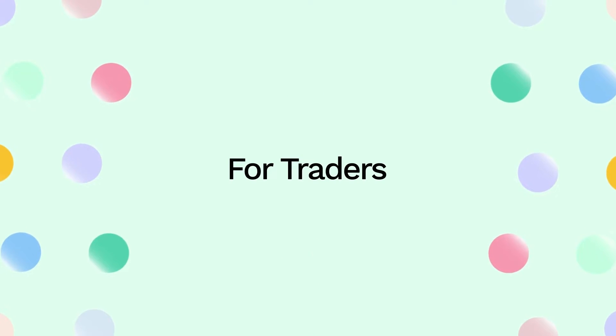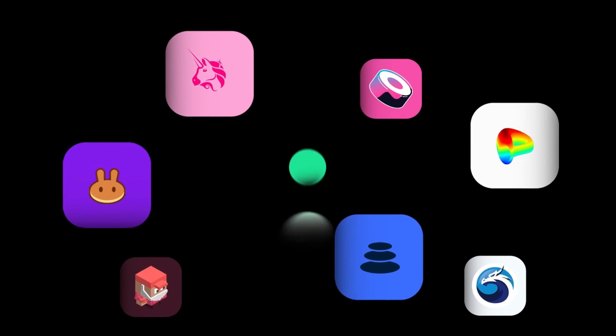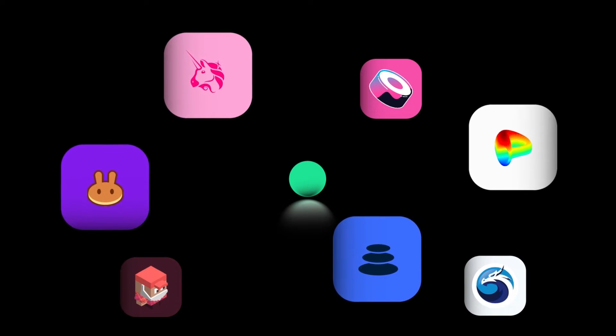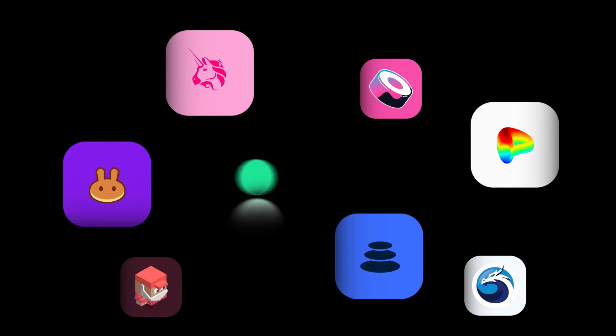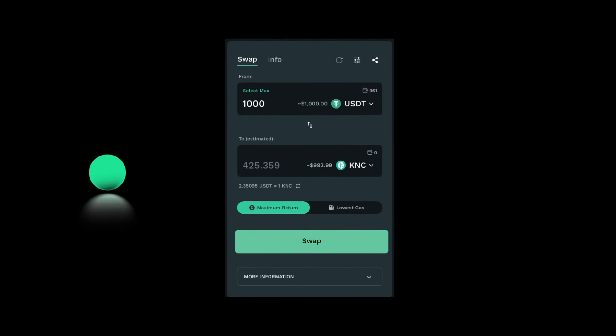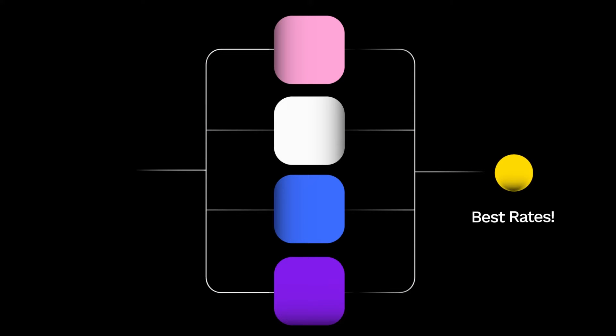For traders, it is hard to compare token exchange rates on different decentralized exchanges. With a single click, KyberSwap splits your trade and swaps tokens across multiple DEXs within the chain through an optimal route, getting you the best rates in one simple transaction. No more searching, comparing, and calculating.